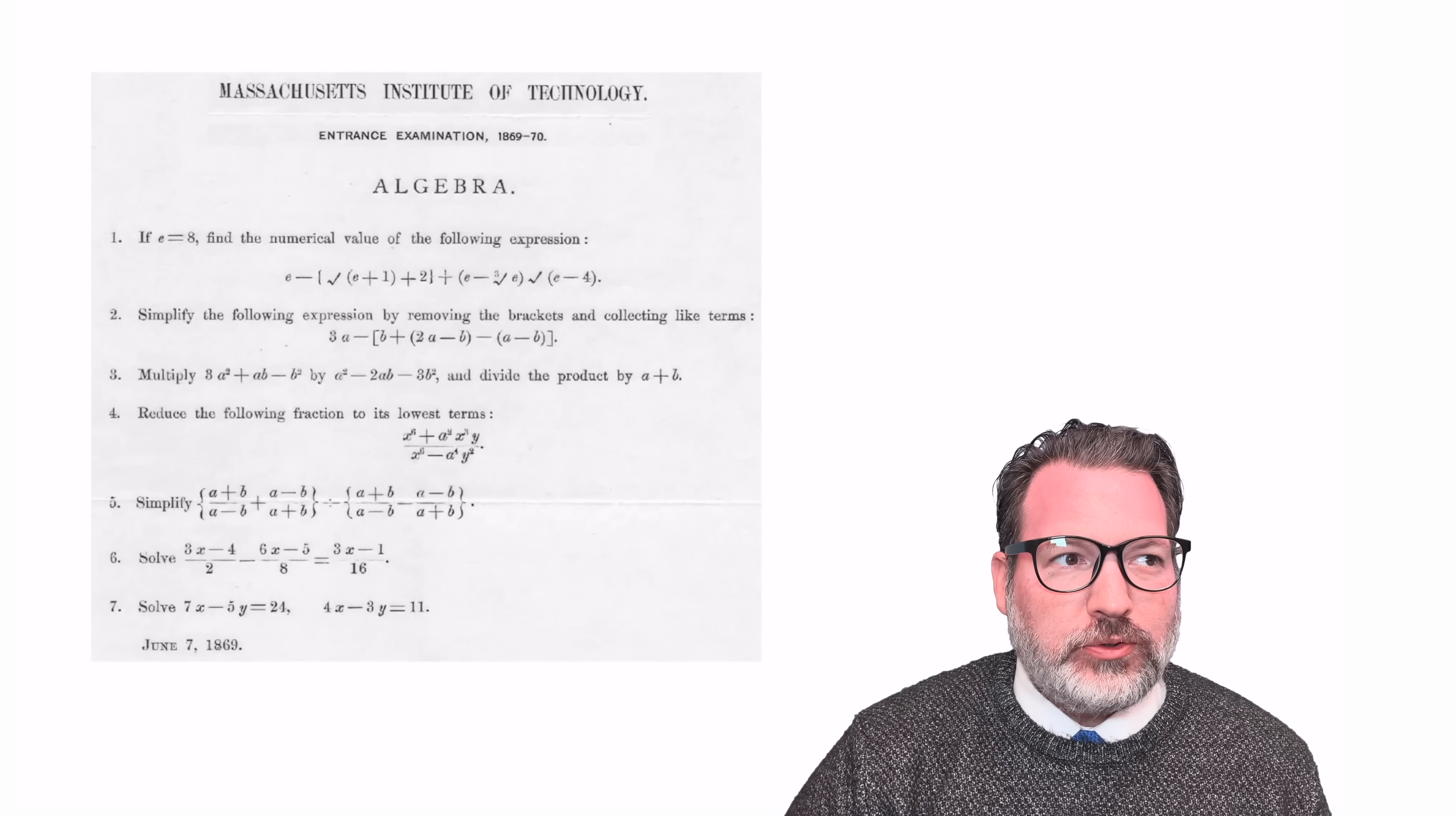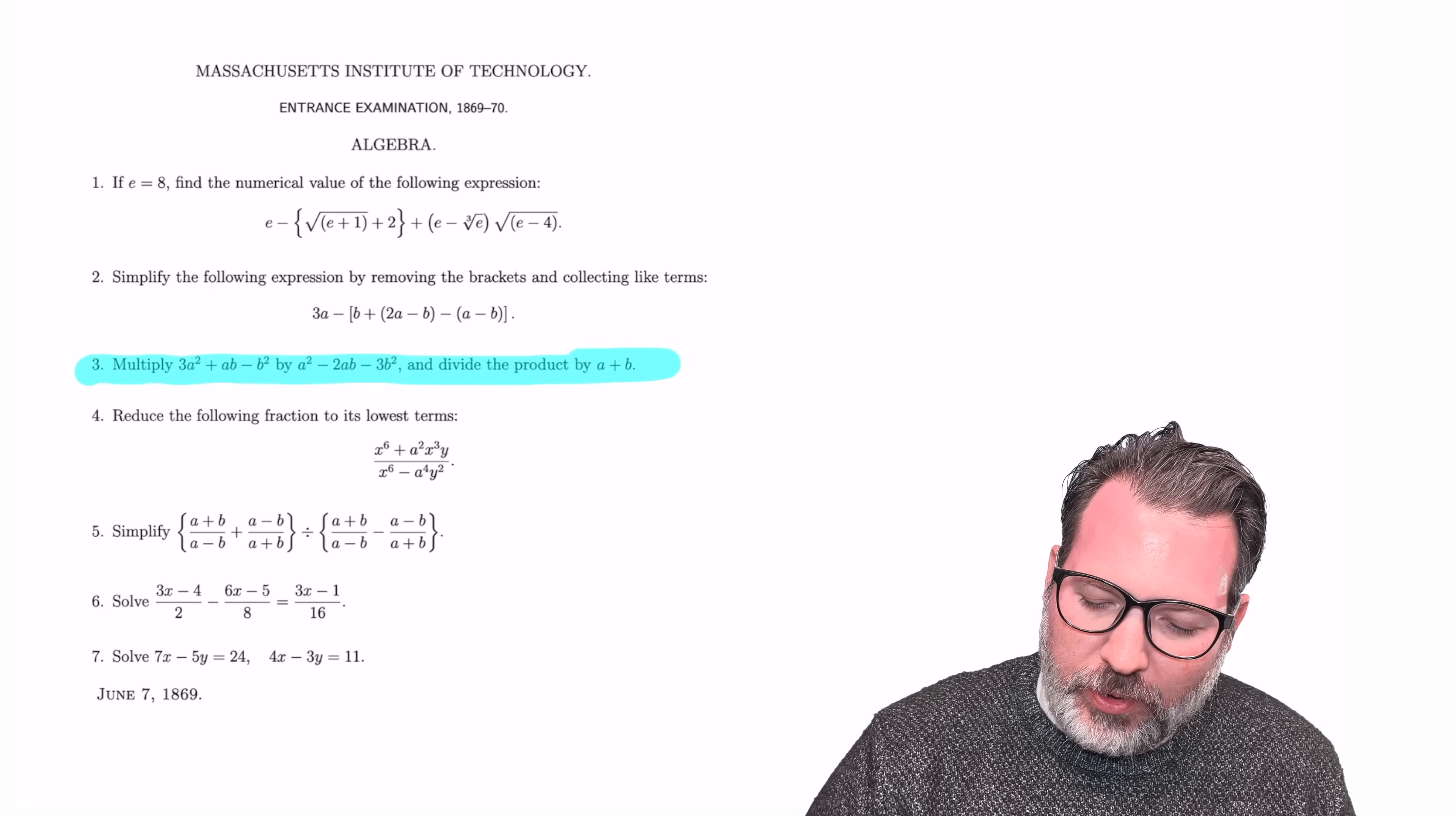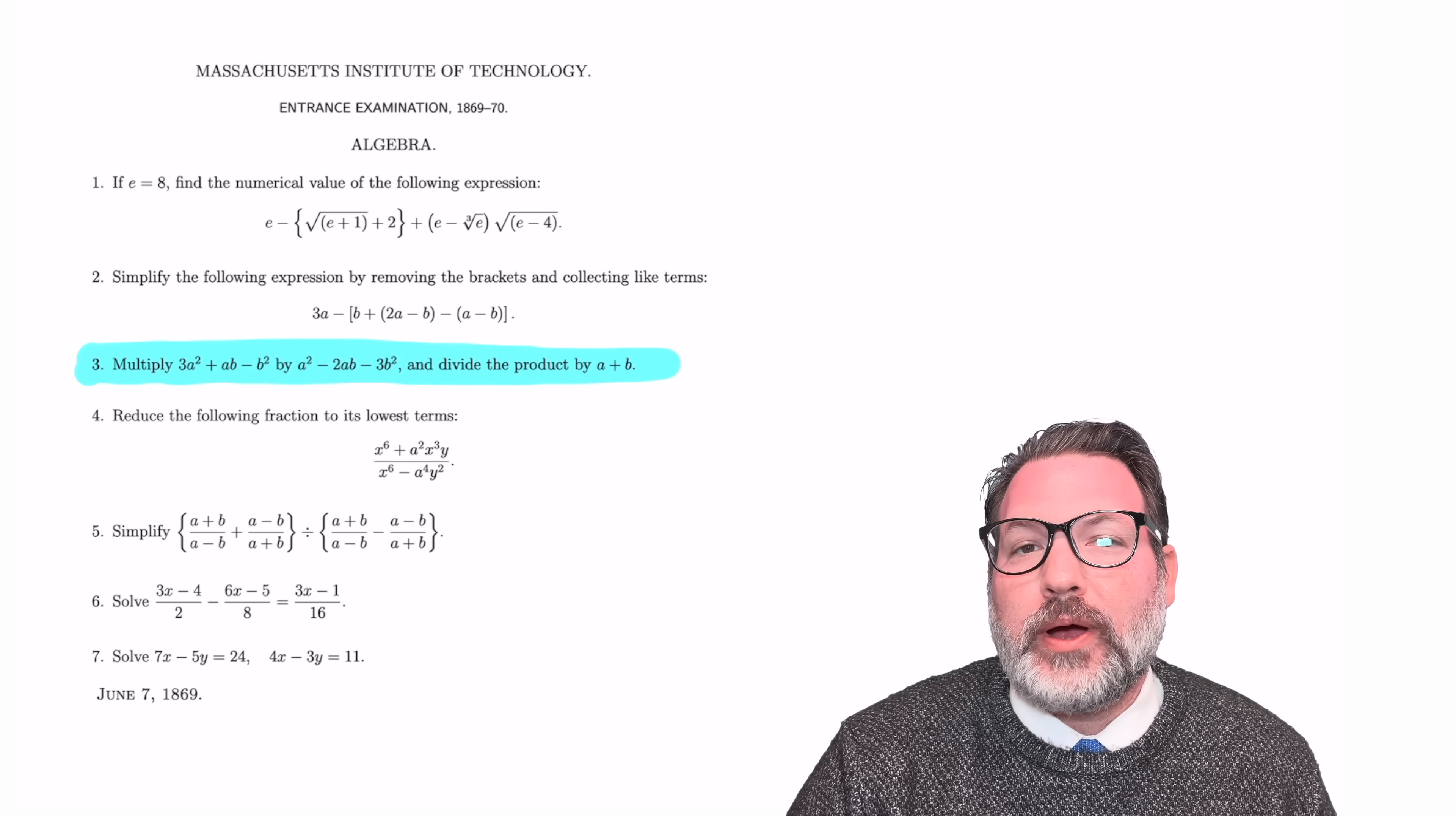It would be weird if we had an entrance exam from 150 years ago that looked precisely like an entrance exam today. There are things that our students probably can't do, and there are lots of things the student from 1869 couldn't do that students today take for granted. That being said, I do want to focus on one question in particular here, this question number three, because this is a question that definitely could still pop up on an entrance exam today, or whatever the equivalent is. This is a basic algebra question.